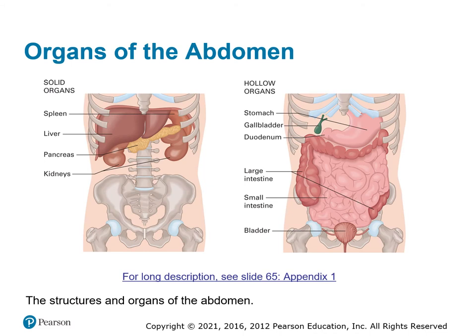It's important to remember where the solid organs are versus the hollow organs. The solid organs are the spleen, the liver, the pancreas, and the kidneys — kidneys being retroperitoneal but still in the abdominal area.